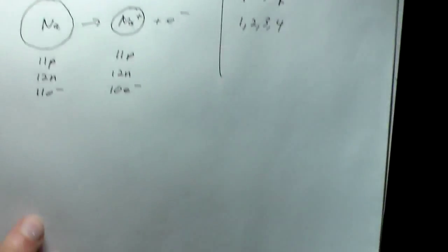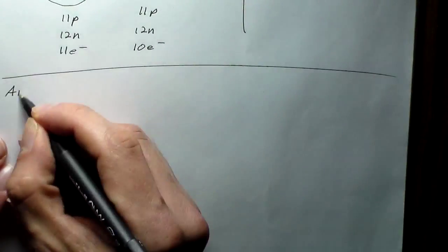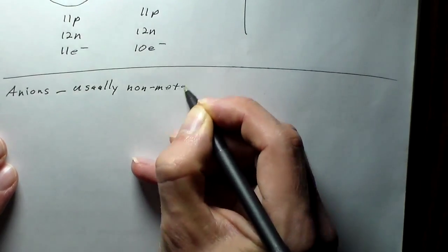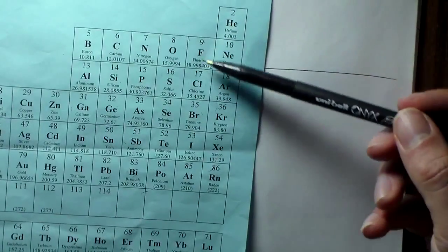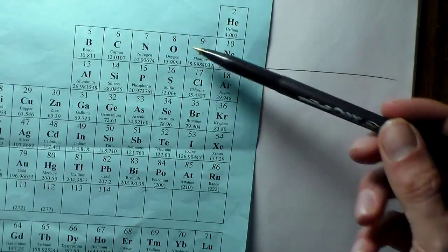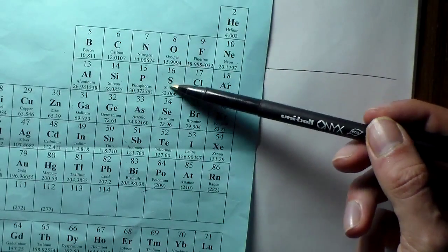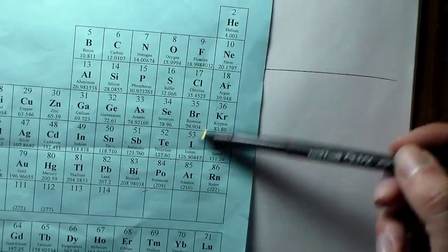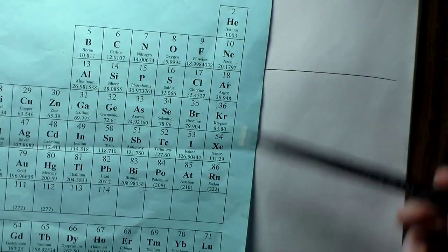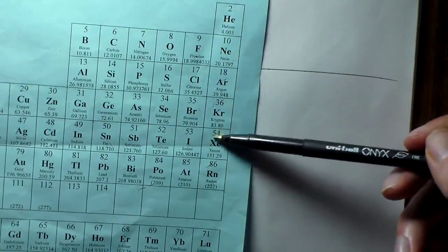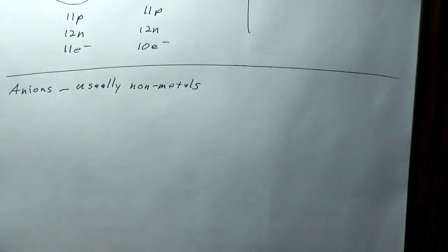Next up are the anions. Like cations are usually metals, anions are usually going to be the nonmetals — the halogens like fluorine, chlorine, bromine, and iodine; the chalcogens like oxygen and sulfur; and nitrogen and phosphorus. These are the ones you'll generally see as anions. The noble gases don't really form compounds, so we're not going to worry about any charges with those.